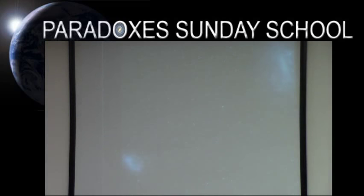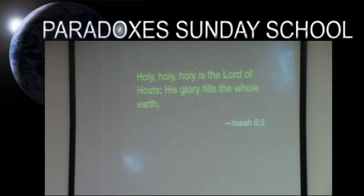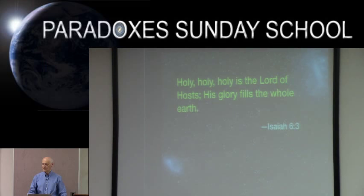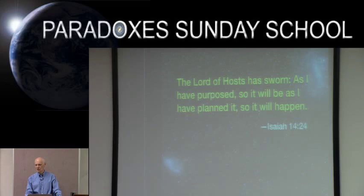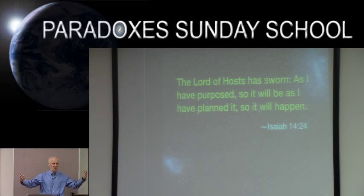Beginning with Isaiah 6:3: 'Holy, holy, holy is the Lord of hosts — his glory fills the whole earth.' This text tells us every part of God's creation reveals his glory — even a cockroach or a particle of dust in the asteroid belt — and it's an exhortation to look for that glory in everything we see. Then Isaiah 14:24: 'As I have purposed, so it will be; as I have planned it, so it will happen.' This tells us there are no accidents or random outcomes in God's creation — everything is under his control and has a purpose.